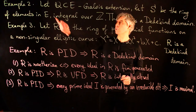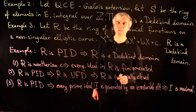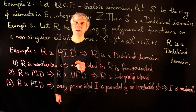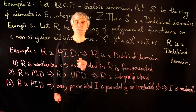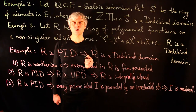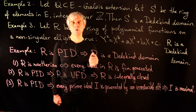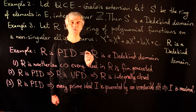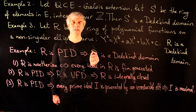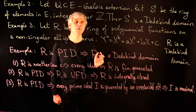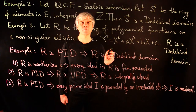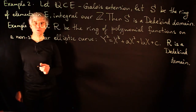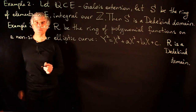Example 2 is related to Galois groups and algebraic number theory. Example 3, or more generally, polynomial functions on algebraic curves over a finite field, are used in public key cryptography.